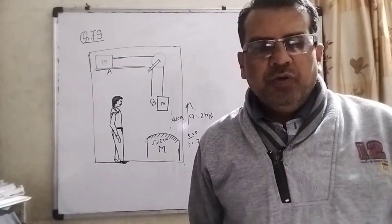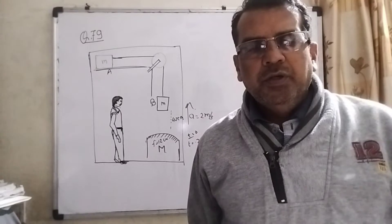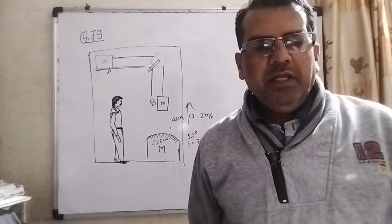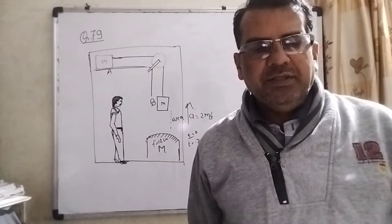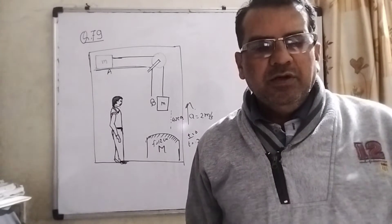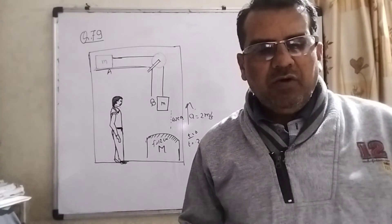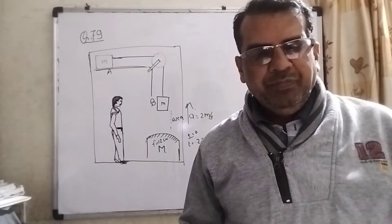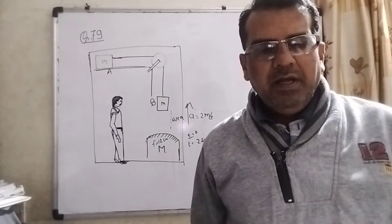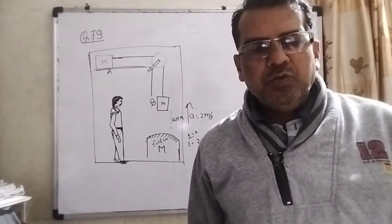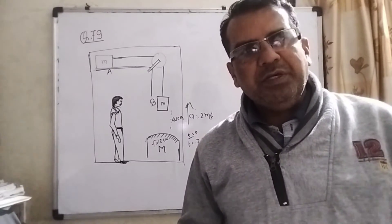Consider the situation shown in the figure. The elevator is going up with an acceleration of 2 meter per second square, and the focal length of the mirror is 12 cm. All the surfaces are smooth and pulley is light. The mass-pulley system is released from rest with respect to the elevator at t equal to 0. When the distance of B from the mirror is 42 cm, find the distance between the image of the block B and the mirror at t equal to 0.2 second. Take g equal to 10 meter per second square.